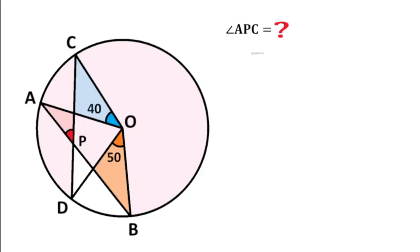Welcome to Definite Mind. In this question, there is a circle, and it is given this blue angle is 40 degrees and this orange angle is 50 degrees, and we have to find this red angle, that is angle APC. You should try to solve this at least one time, then watch the solution.